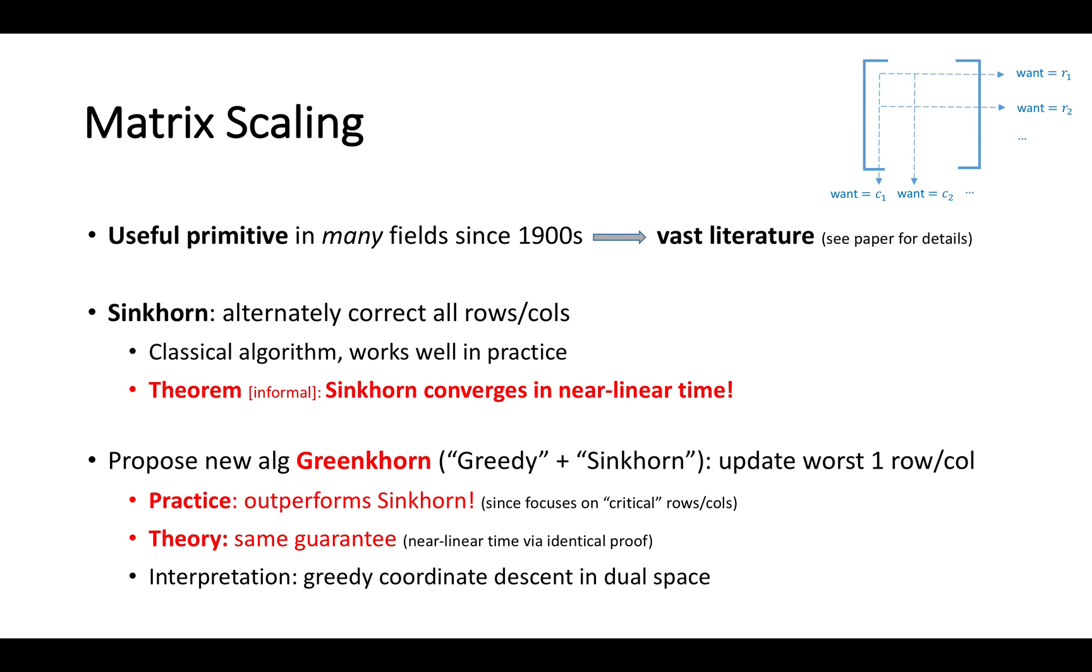Our proof of this result suggests a greedy variant of Sinkhorn that's much better in practice. The idea is quite simple. In each iteration, only update the single row or column that is most violated. This allows us to focus on the most important rows and columns to spend more time fixing them.